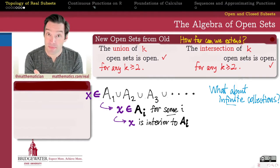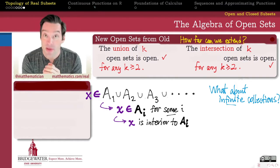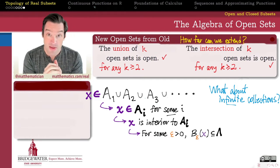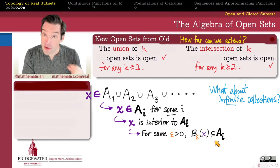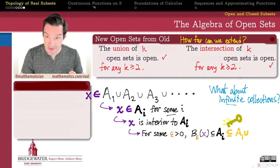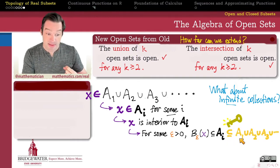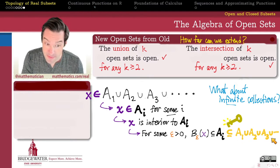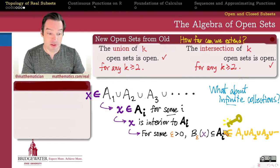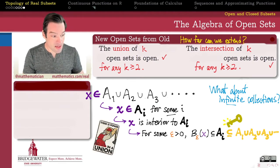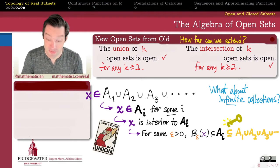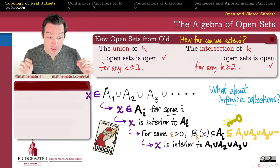Because each of my A sub i's is an open set, x must have been interior to A sub i. So there is some epsilon neighborhood around x for a positive value of epsilon such that that epsilon neighborhood is entirely a subset of A sub i. But if the epsilon neighborhood around x is entirely a subset of A sub i, and this is the key: A sub i is a subset of the union of all of the A's, because every set in a collection is a subset by definition of the union of that collection. That must mean that my epsilon neighborhood is also a subset of the infinite union, and therefore x is an interior point of the infinite union.